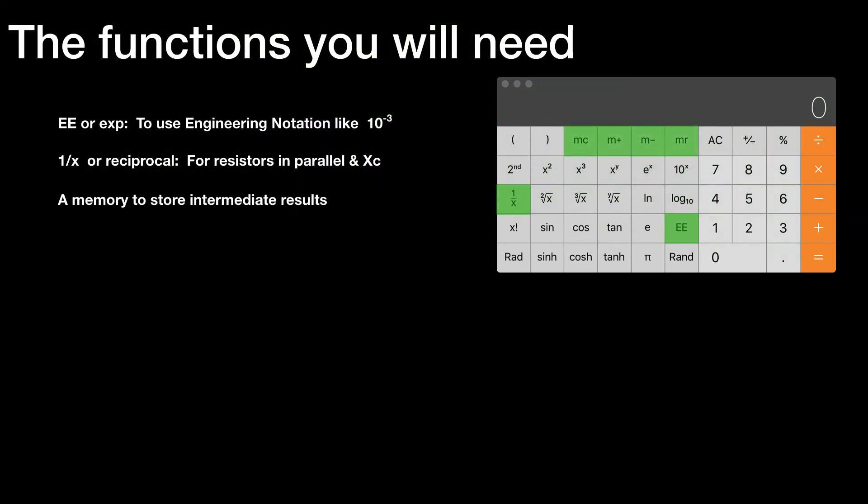Some sort of memory to store intermediate results. Different calculators have different ways of doing it. This on-screen calculator has four buttons: memory clear, memory plus, memory minus, and memory recall. Others have buttons like STO for store and RCL for recall. Most scientific calculators have some sort of memory available.